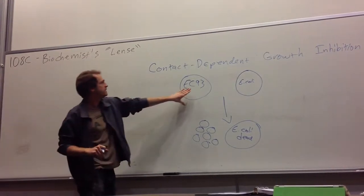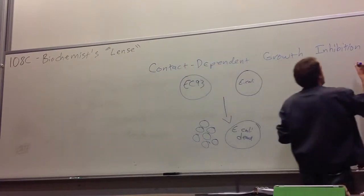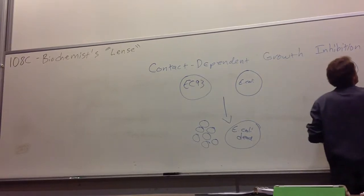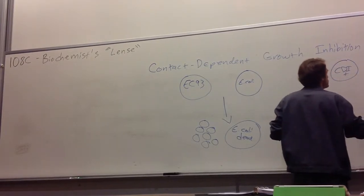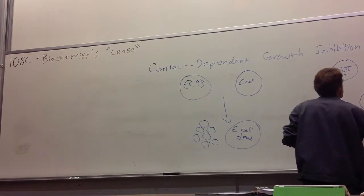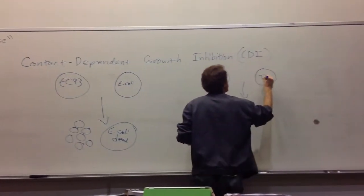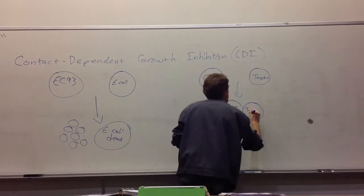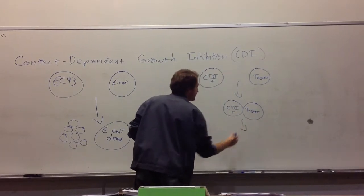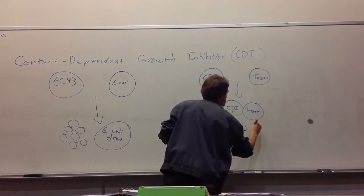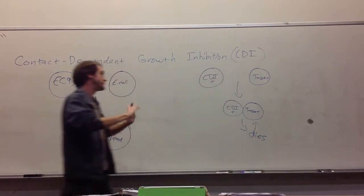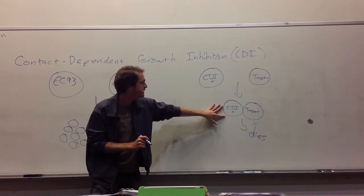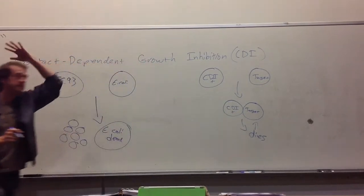He wanted to figure out how this happened. And he found that the cells actually have to touch for this to happen. So he found that it happens in two steps. We'll have our CDI plus cell here, a cell that can kill others. He found that the first step was adhesion. We call this a target, a neighboring cell. First they touch and they adhere to each other. And then after that, the target cell dies, either stops growing or just completely loses viability altogether. So first they touch, they adhere, and then the target cell dies.